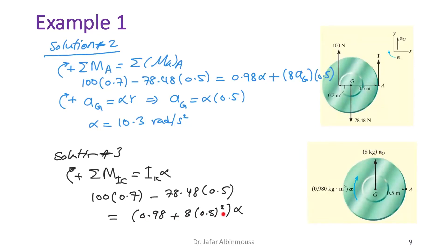The entire expression I_IC is multiplied by α. Since the only unknown is α, solving gives α = 10.3 rad/s² — confirming the previous results.